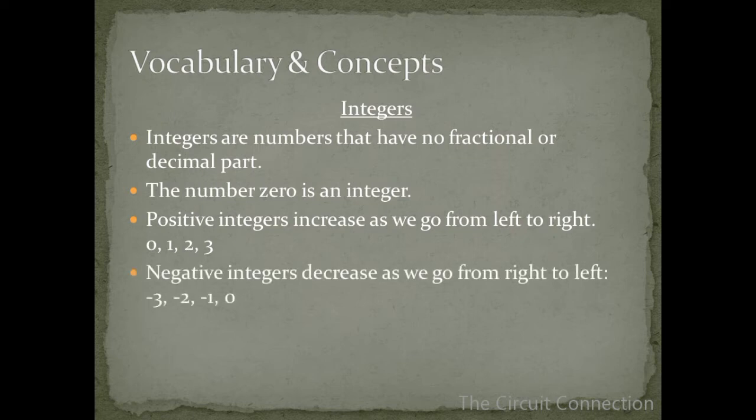Negative integers decrease as we go from right to left. So we're going to start at right and then we're going to go left: 0, negative 1, negative 2, negative 3. Those are decreasing from right to left.